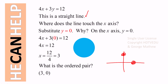Where does the line touch the x-axis? On the x-axis, y is equal to 0. So we set y equal to 0 and solve for x. When you put y equal to 0, the 3y term goes to 0, so you get 4x equals 12. Divide both sides by 4 and you get x equals 3.